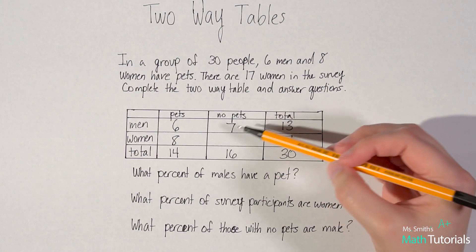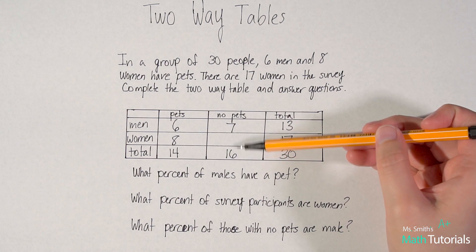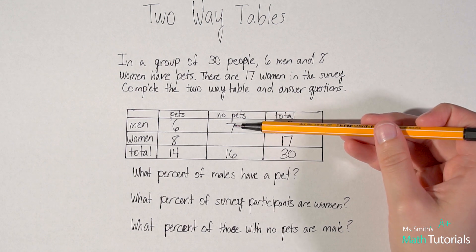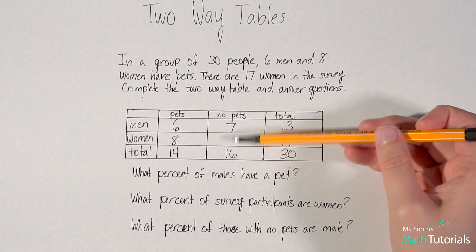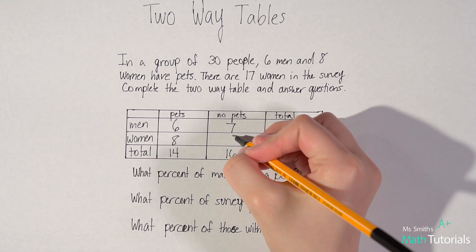And then here, if I know I have 16 total people without pets, seven of them are men, can I do 16 minus seven to find out how many were women? Yeah. And it would be nine.